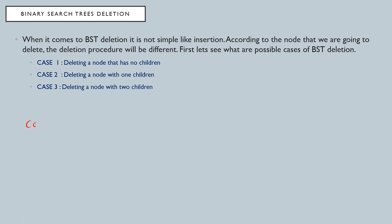For case one, suppose we have a tree and this is the node I am going to delete, and this node has no children. That is the case one deletion. I will explain this in more detail later — for now I'm just introducing what these cases are.